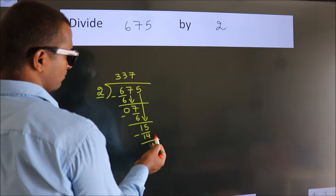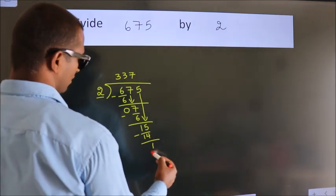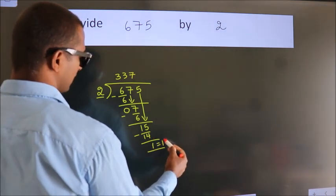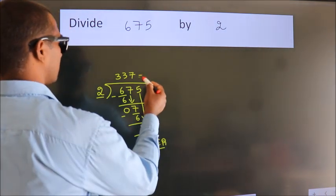No more numbers to bring it down. So, we stop here. This is our remainder. This is our quotient.